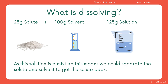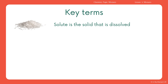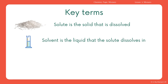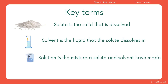And as this solution is a mixture, it also means that we can separate it to get the solute back. The key terms: the solute is the solid that's dissolved — an example is salt. The solvent is the liquid that the solute dissolves in — in our example, water. The solution is the mixture made from the solute and the solvent.